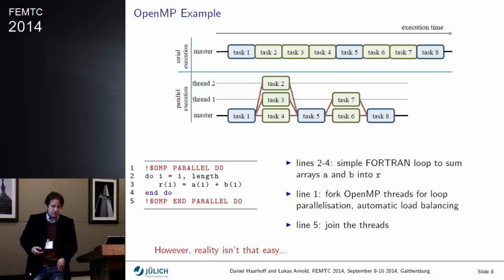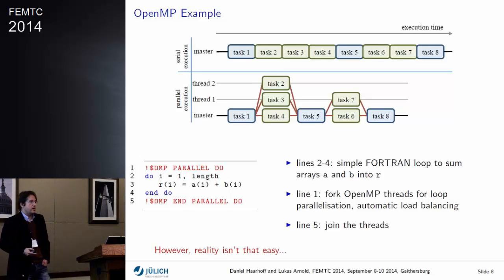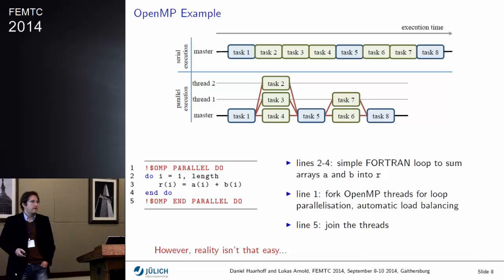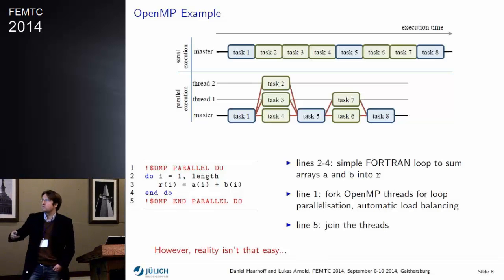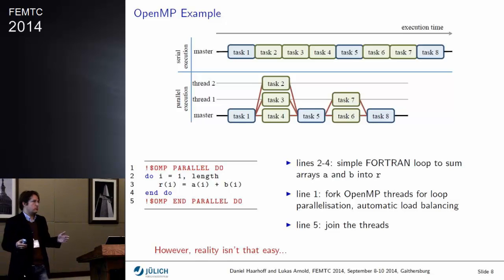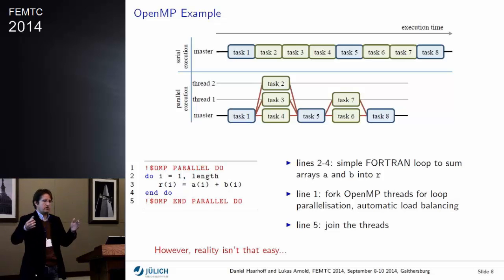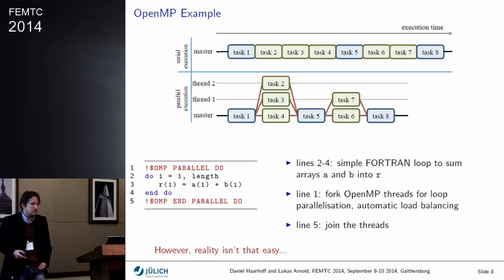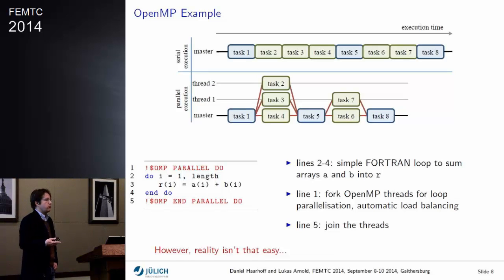In a very simple case, it might be enough just to adapt loops. How does it work? Imagine you've got a serial application with one core. A useful picture is that you've got tasks — groups of execution instructions. In this case, eight tasks representing our execution. In many cases, you've got tasks which are independent of each other.